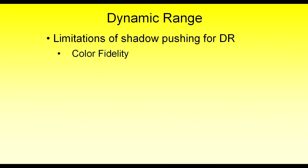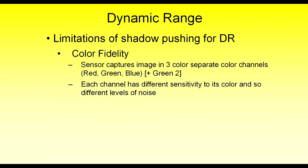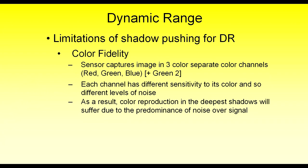Another limitation of achieving dynamic range with shadow pushing is color fidelity. These sensors capture color in three separate channels — red, green, and blue — and each of those channels has a different spectral sensitivity to its color, so there are different levels of noise between the channels. Normally in the midtones and highlights, that difference doesn't matter because the image data is bright enough to completely overwhelm the noise. But as you go into the deeper shadows, the color reproduction is affected adversely. If you have a lot of noise in the red and blue channel compared to the green channel, the raw processor like Lightroom may not be able to accurately reproduce those colors from the raw data — what should be a yellow color may look more greenish. This shows up as color blotchiness, which I'll demonstrate when I compare the photographs.